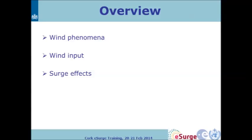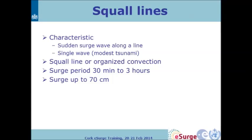First I'll say a little bit about the wind phenomena that are of interest for surges and show some examples, then talk about wind inputs and surge effects. Squall lines are lines of convection that occur when meteorological cold fronts come in. In terms of surge they cause a surge wave along a line which propagates onto the coast. They generally look like a single wave — comparable to a harbor-type wave like a tsunami, but much more modest — coming as single events.